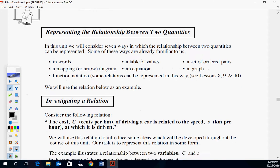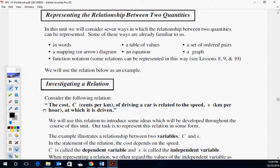In this unit, we'll consider seven ways which relationships between two quantities can be represented. In words, mapping diagram, table of values, ordered pairs, an equation, a graph, and function notation. So these are the same seven topics we're going to cover when it comes to relations.